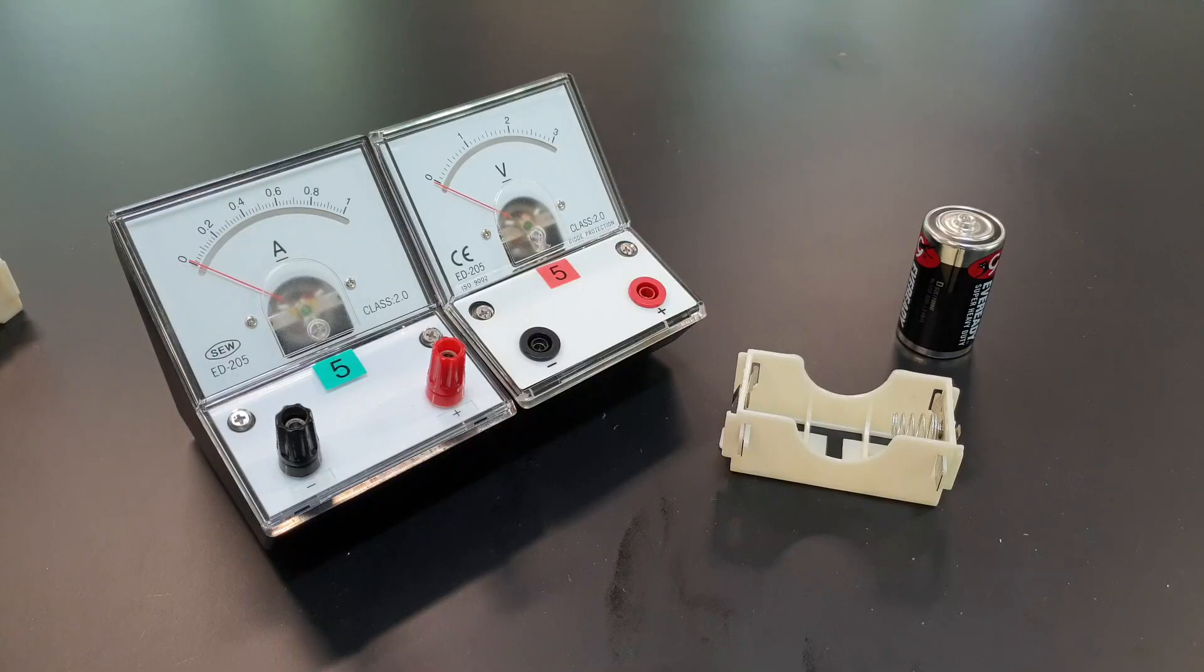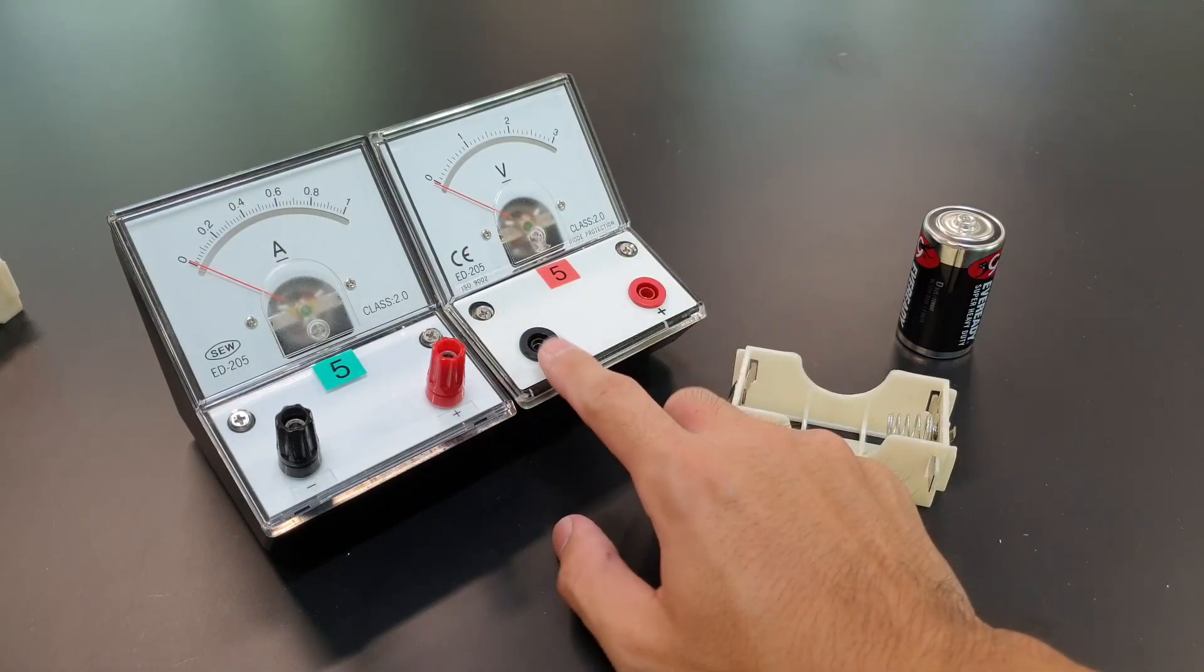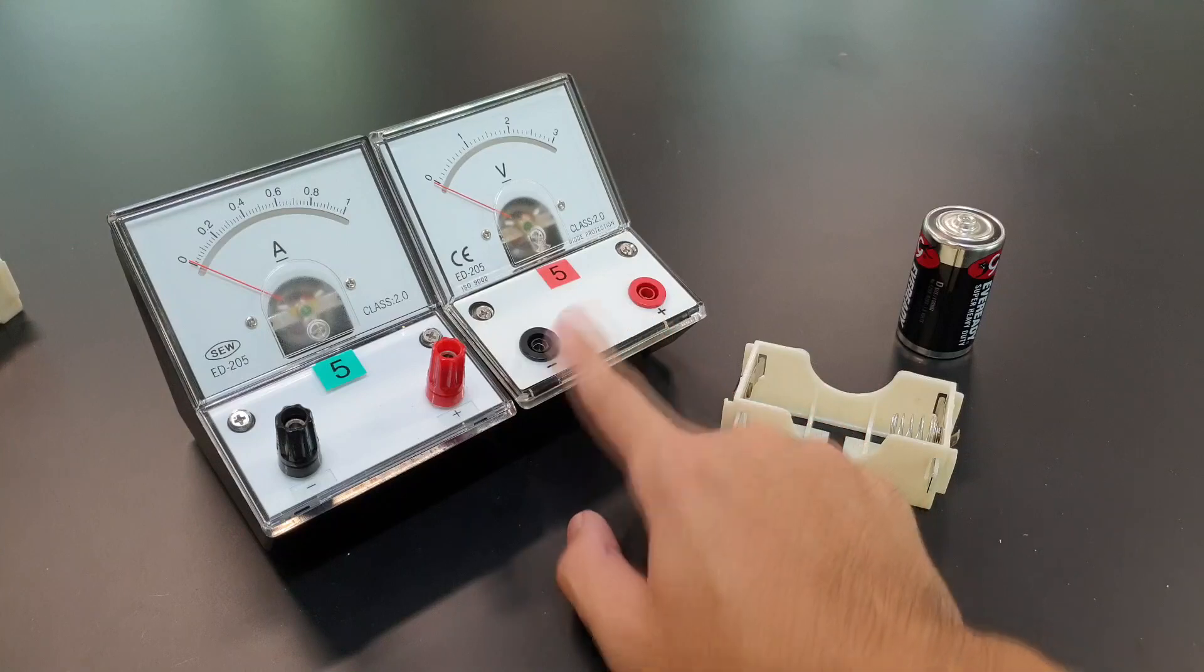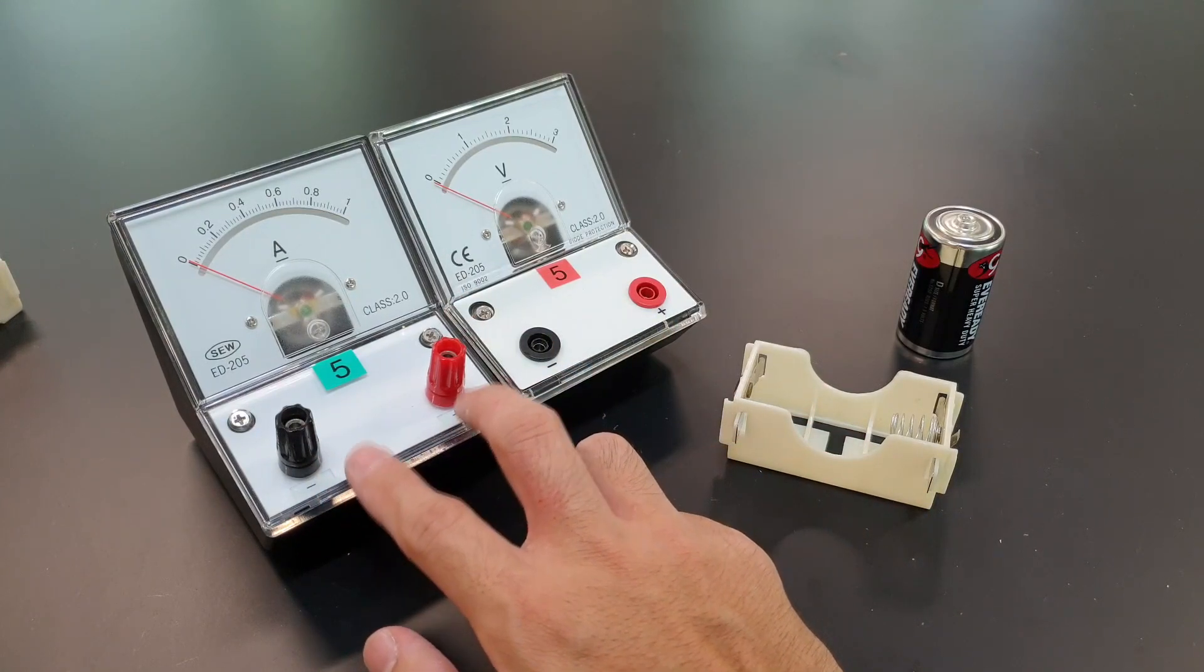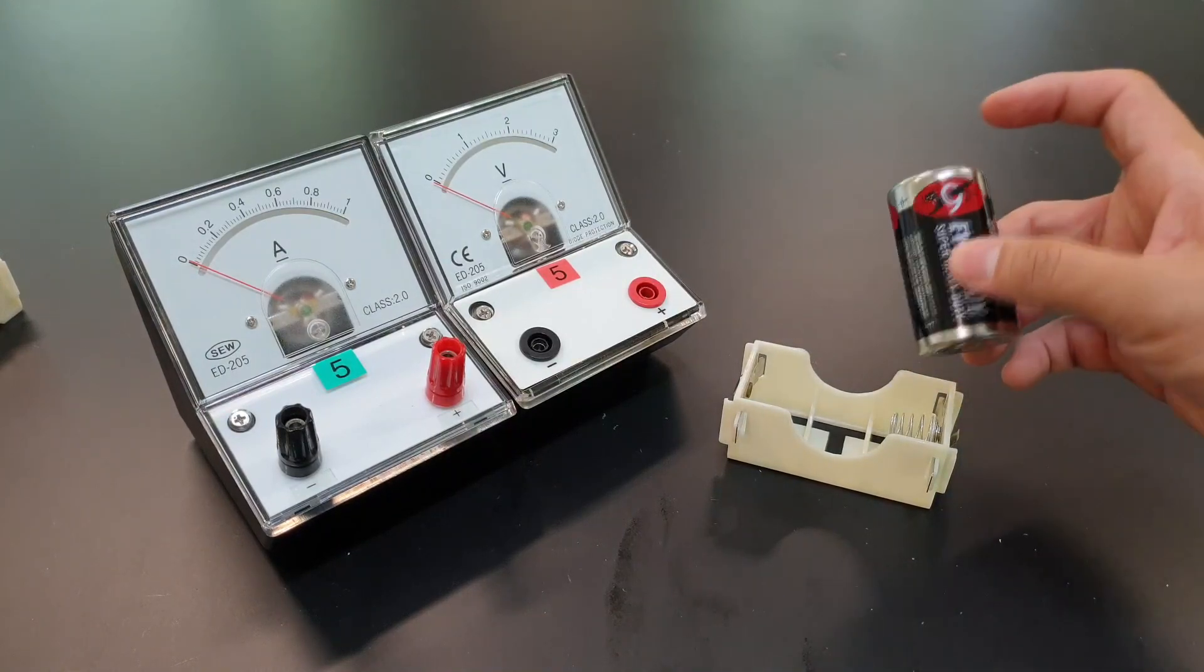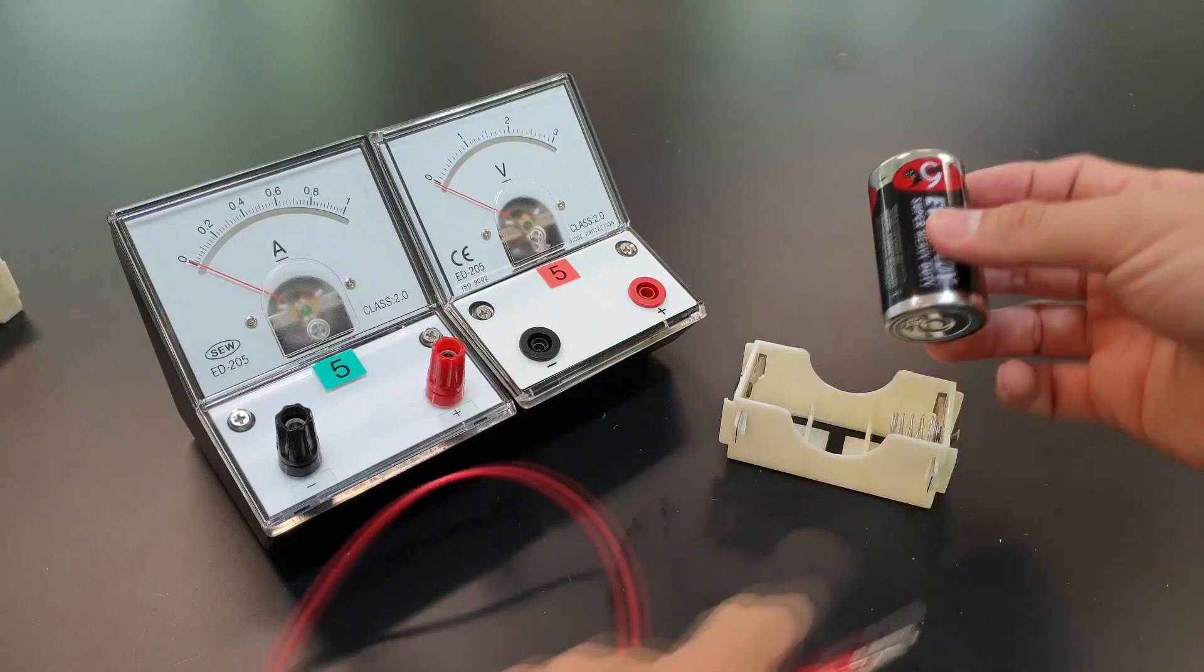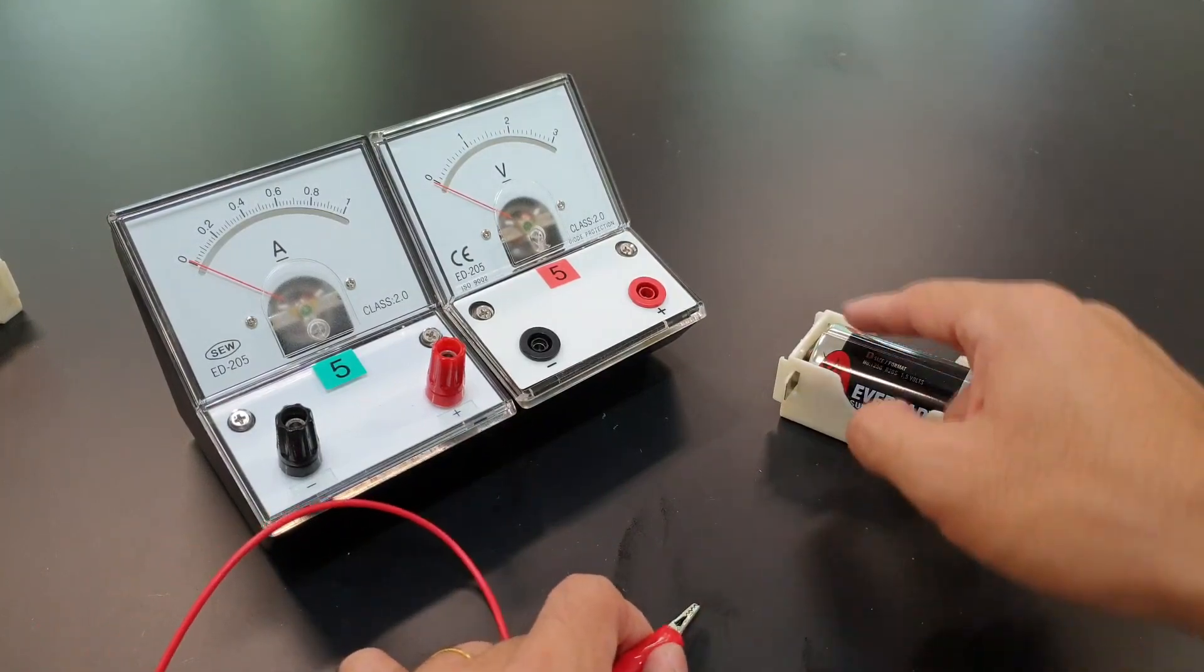In electricity practicals, you usually use voltmeter and ammeter, but sometimes the connection points on the meters are different. Nonetheless, they each have a positive and negative terminal, just like the battery here. The top here is positive terminal and the bottom here is negative terminal. It's important to know that conventional current will flow out from the positive terminal.